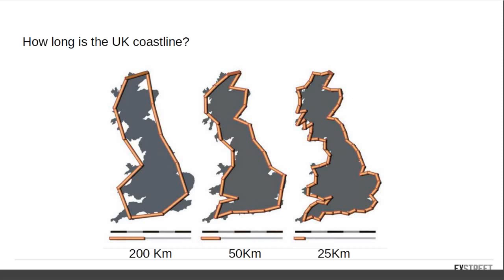If we were to walk the physical coast itself, measuring meter by meter or centimeter by centimeter — all the rocks, beaches, and small inlets — then obviously the coastline measurement would go around the planet several times, because of the small unit we would be using to measure it.